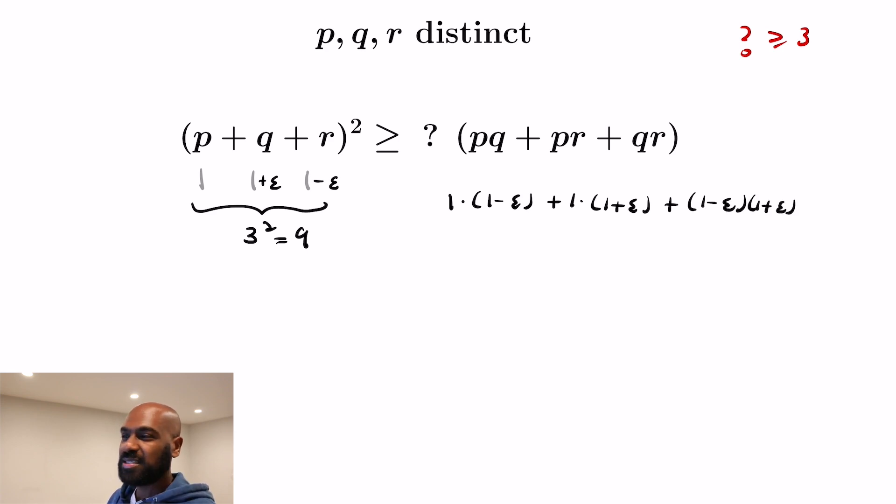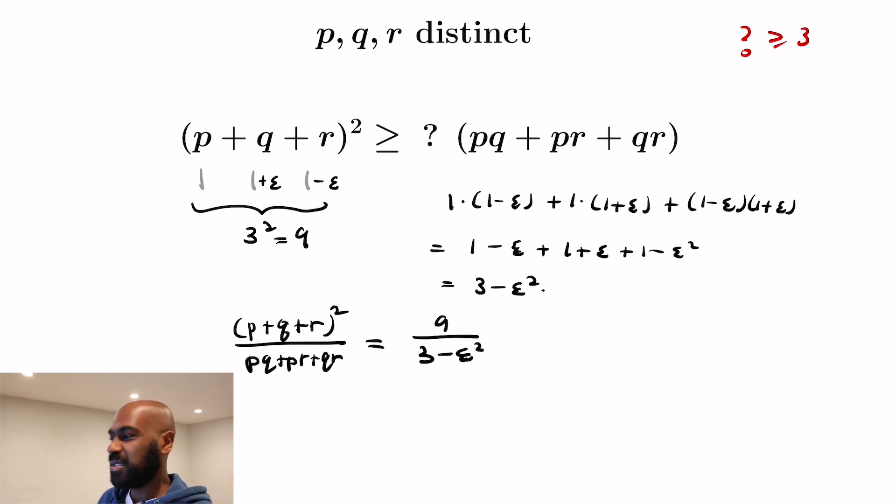And so if you look at the net effect of perturbing Q and R just slightly, you get 1-ε, 1+ε, and then a 1-ε² to give you a total of 3-ε². So if we look at the fraction (P+Q+R)² divided by the thing on the right hand side, which is PQ+PR+QR, we get for this chosen small value ε, 9 over 3-ε².